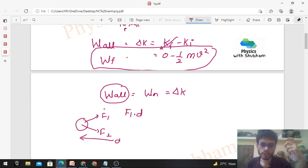F1 dot D. D kya hai? Displacement of the ball. Kitna displace ho gaya? Then plus F2 dot D. Displacement of the ball will remain constant. I am writing the work done by all the forces acting on this particle.